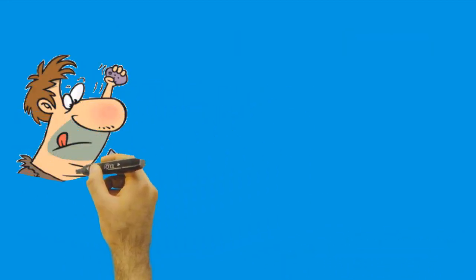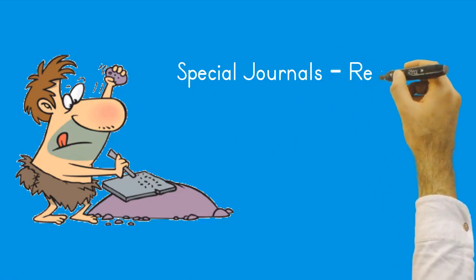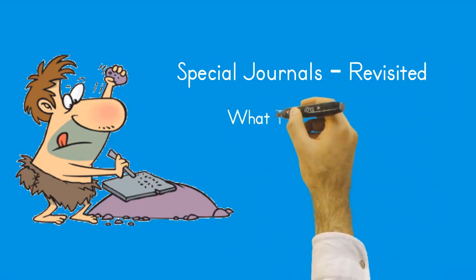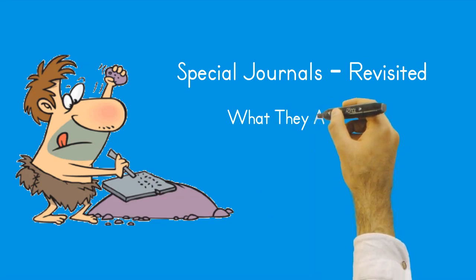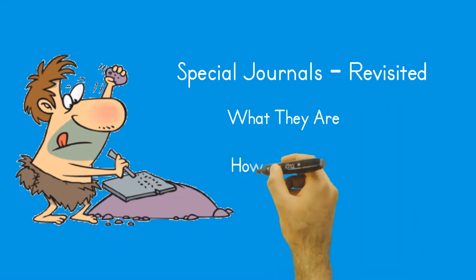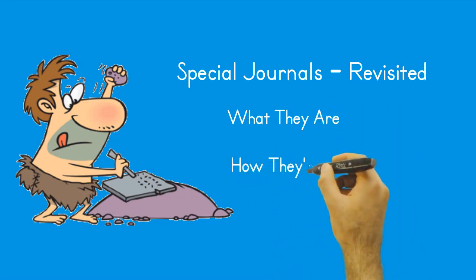Special journals revisited. Special journals were briefly discussed in the introduction. In this lesson, we'll learn more about what they are and how they're used. Special journals are nothing more than journals designed and used for recording a single type of transaction, such as receiving cash or writing checks. What makes them special? Simply that they only record certain types of transactions. How do you know which special journal to use? The definition of the special journal tells you exactly what type of transaction should be recorded in it.